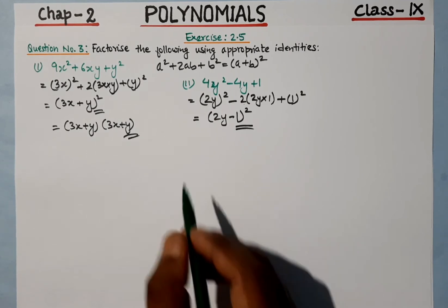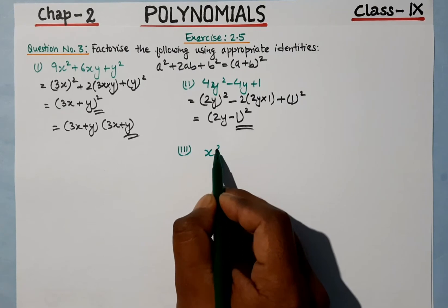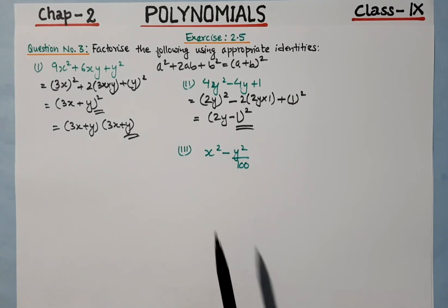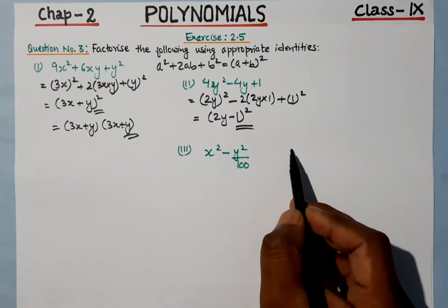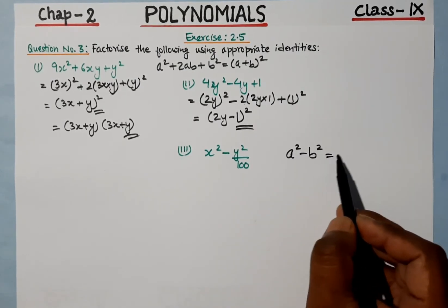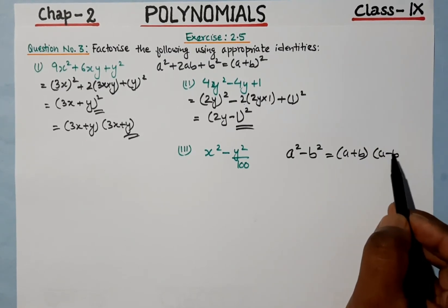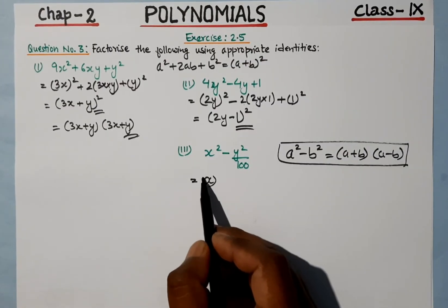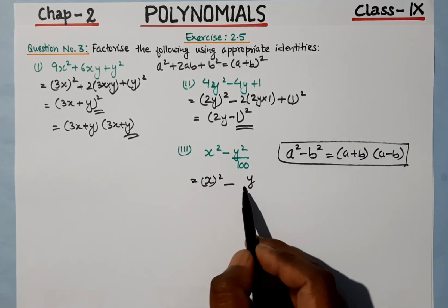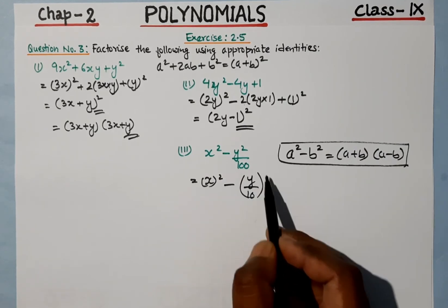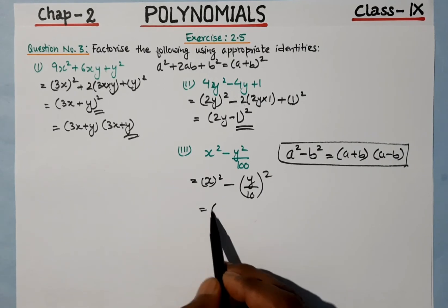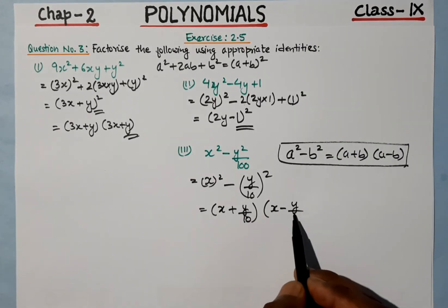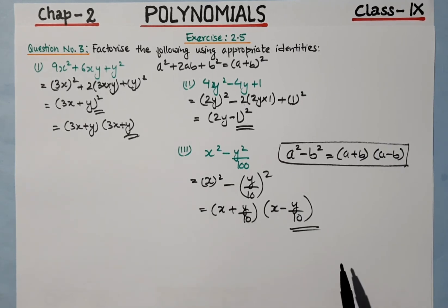Question number 3 is x² minus y²/100. For this we use the identity a² minus b² equals (a + b)(a − b). Here x² is already in square form, and for y²/100 we take the square root of 100 which is 10, so b equals y/10. The answer is (x + y/10)(x − y/10).